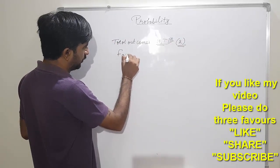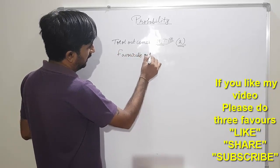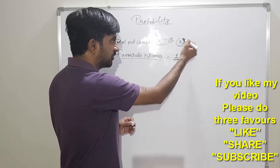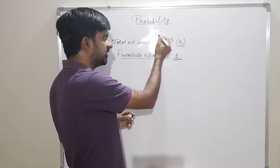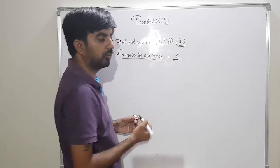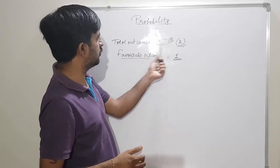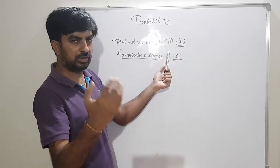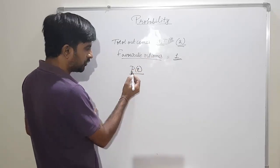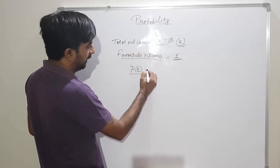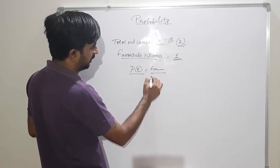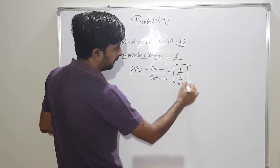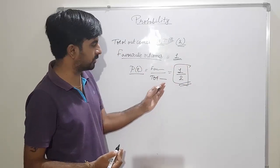Out of that, if I say favorable outcome — what is the probability of getting head? How many times is head coming? Only one time. So favorable outcomes is one. Probability of an event equals favorable outcomes upon total outcomes. So the probability of getting head when a coin is tossed is 1 by 2.